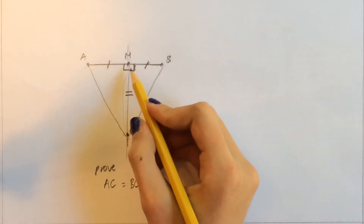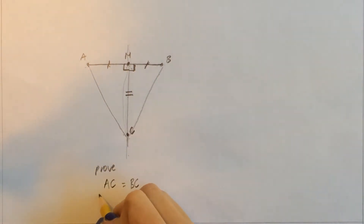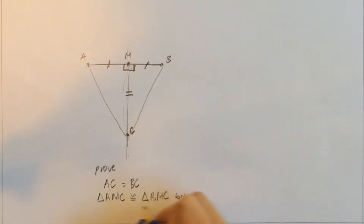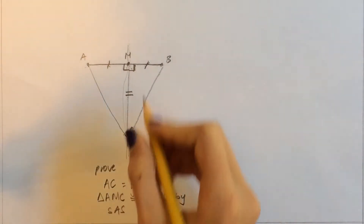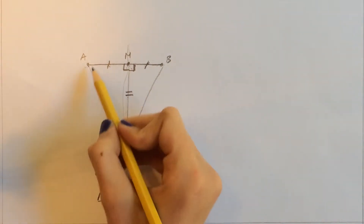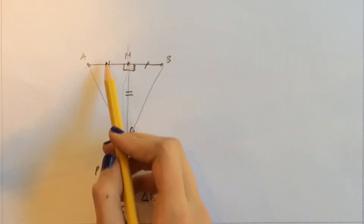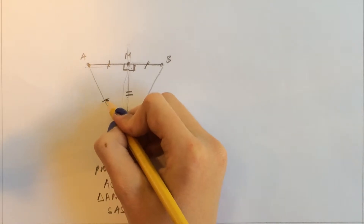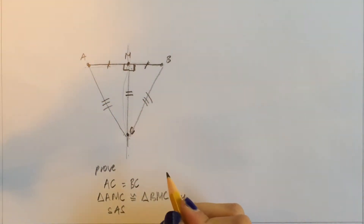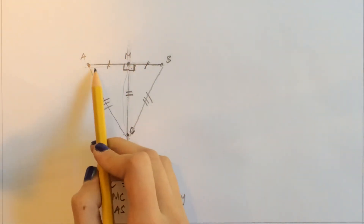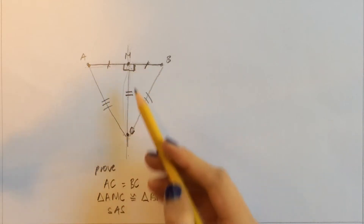By the congruence postulate of side-angle-side, we can say that triangle AMC is congruent to triangle BMC by SAS. Now we know by the postulate that corresponding sides of congruent triangles are congruent, so we can say that every corresponding side of these two triangles is congruent. Therefore AC is equal to BC, and we have proved that any point on the perpendicular bisector of a segment is equidistant from the endpoints of that segment.